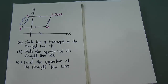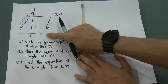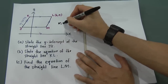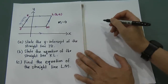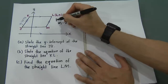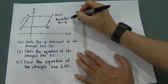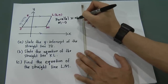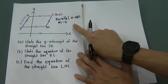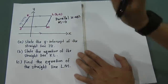Remember: whenever a straight line is parallel to the x-axis, the gradient will equal zero. If it is parallel to the x-axis, there is no slope, so the gradient will be zero.